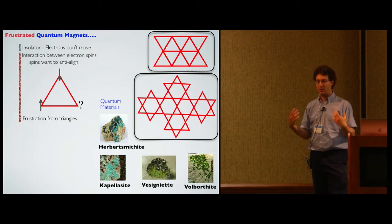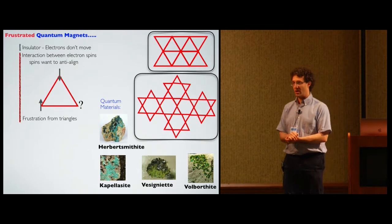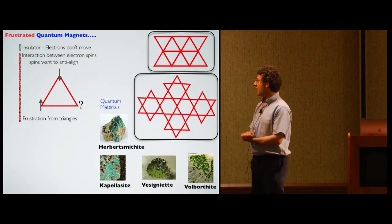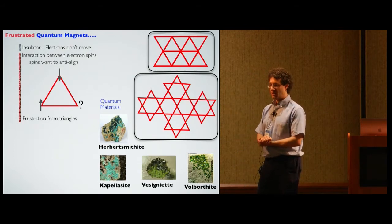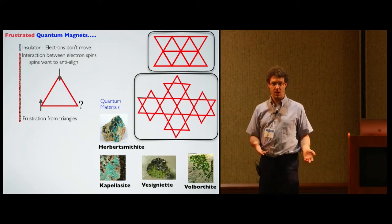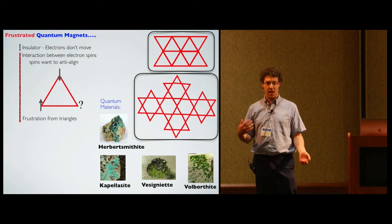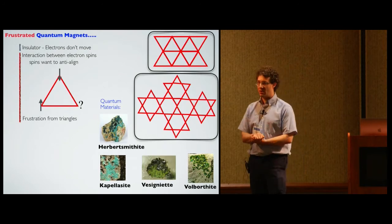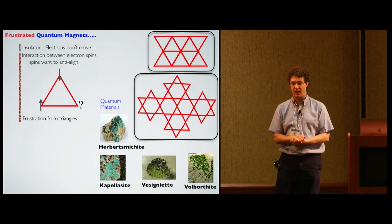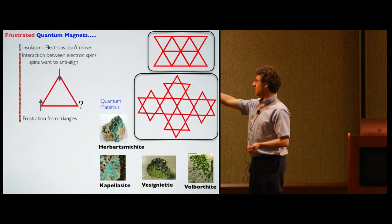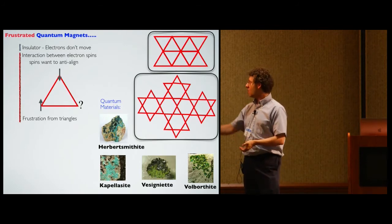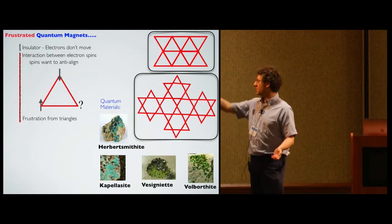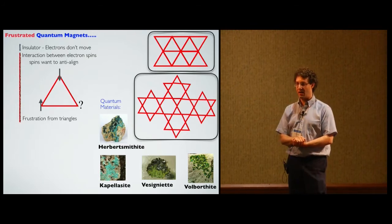We're simulating a particular type of quantum material: frustrated quantum magnets. These are insulating materials — insulators don't conduct, so the electrons aren't moving. But in spite of that, the electrons still interact through their spin degrees of freedom. Spins can be up or down, and in these materials the spins want to anti-align. If they sit on a triangular lattice, the spins can be frustrated — one spin is up, another is down, and you don't know what to do with the third.